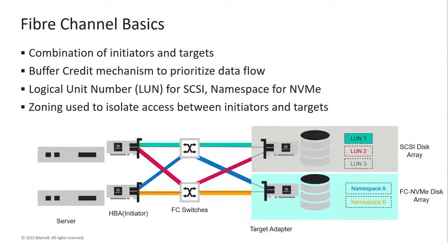Here's a layout of a basic SAN. Dual port HBAs, a pair of switches, and dual controllers in the storage arrays ensure that there are two paths to all devices for high availability. If one element in the data path fails, the system will failover automatically to the other path. The use of buffer credits between all devices on the SAN ensures that read-write operations between devices complete before others are started.